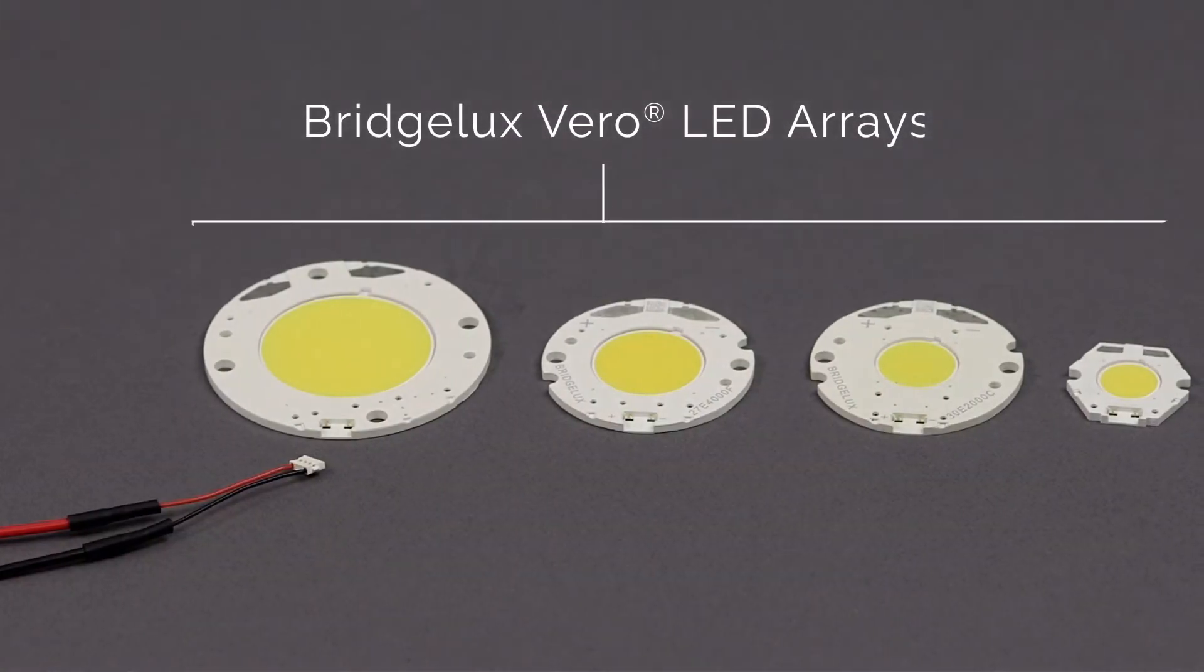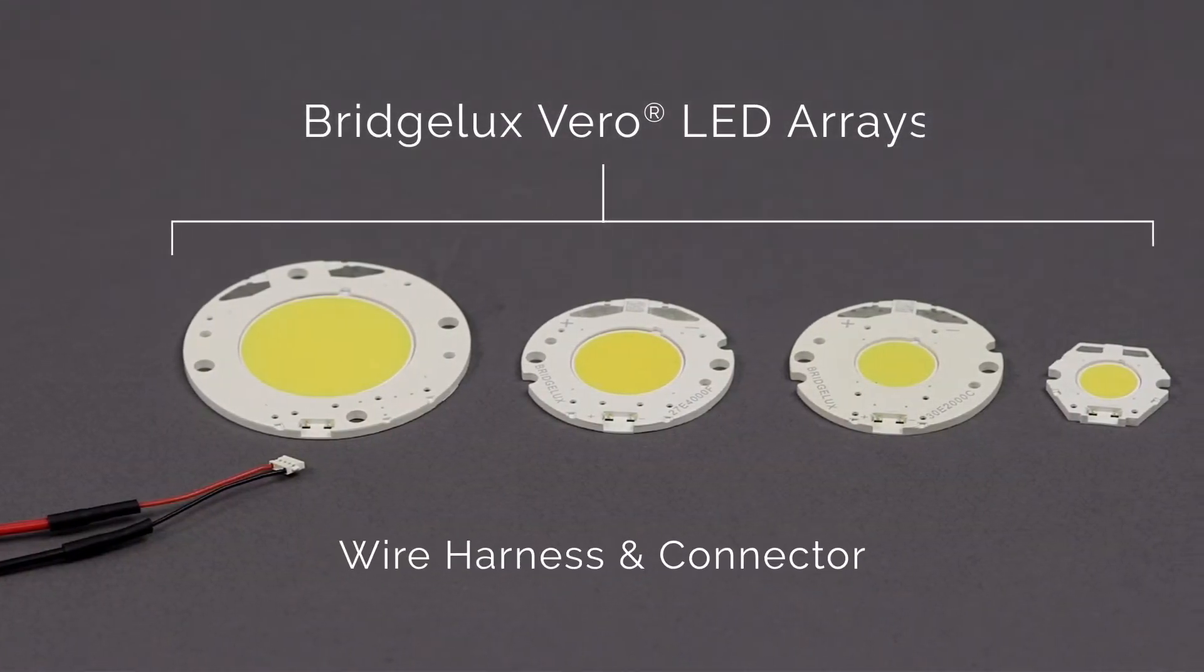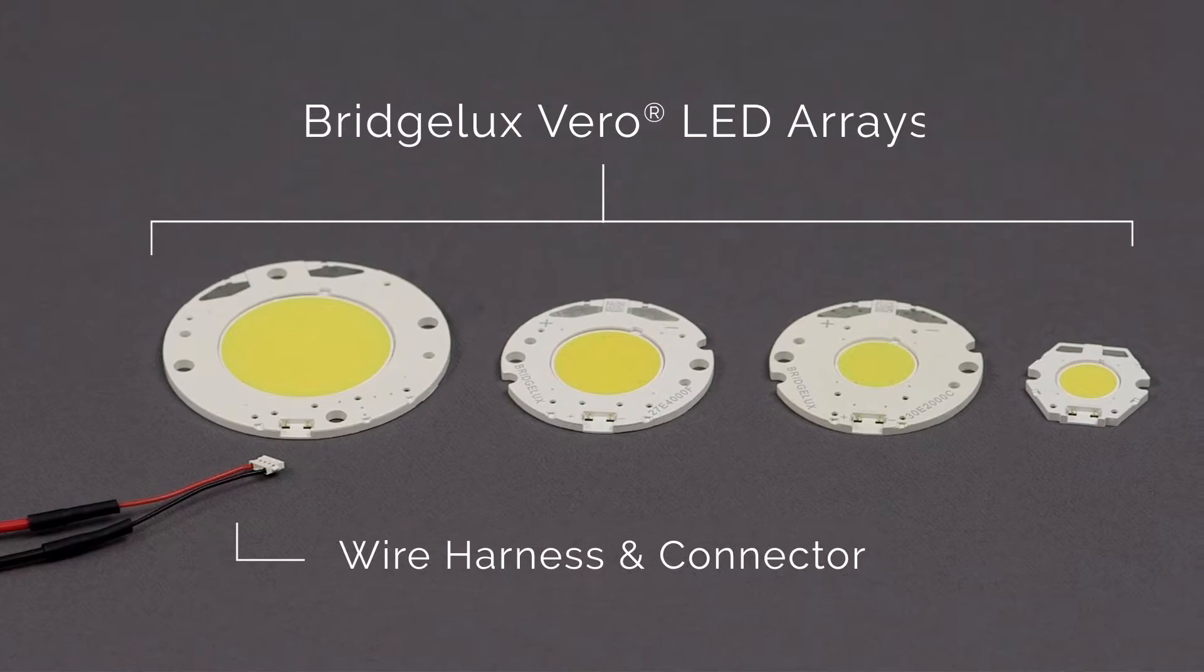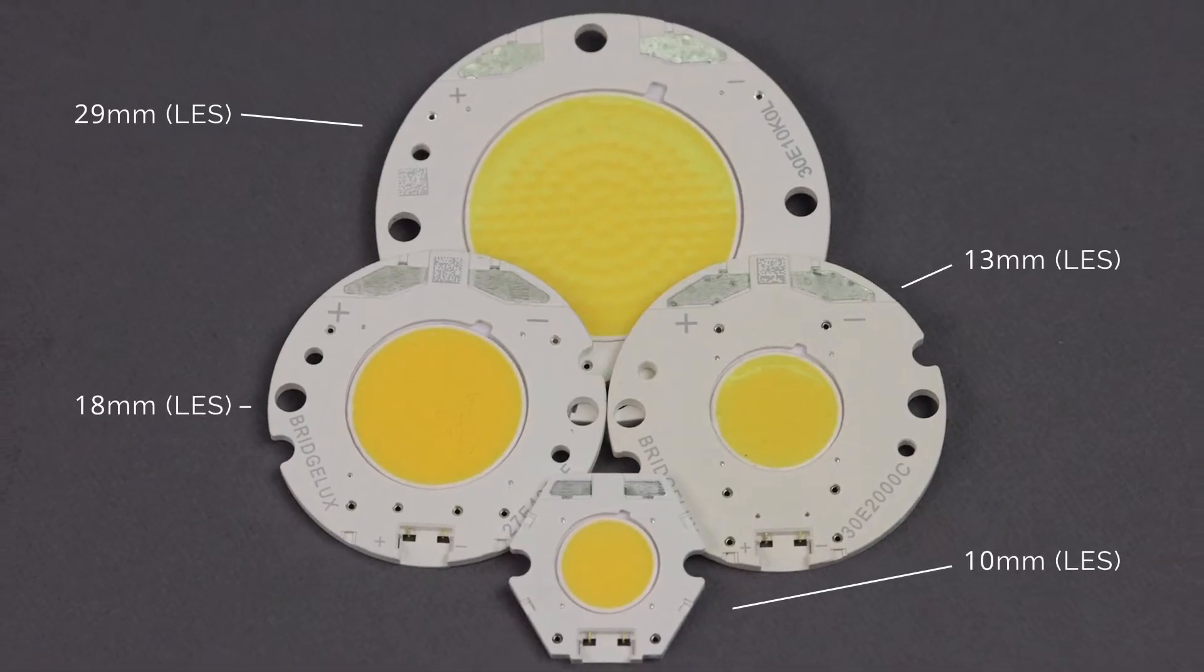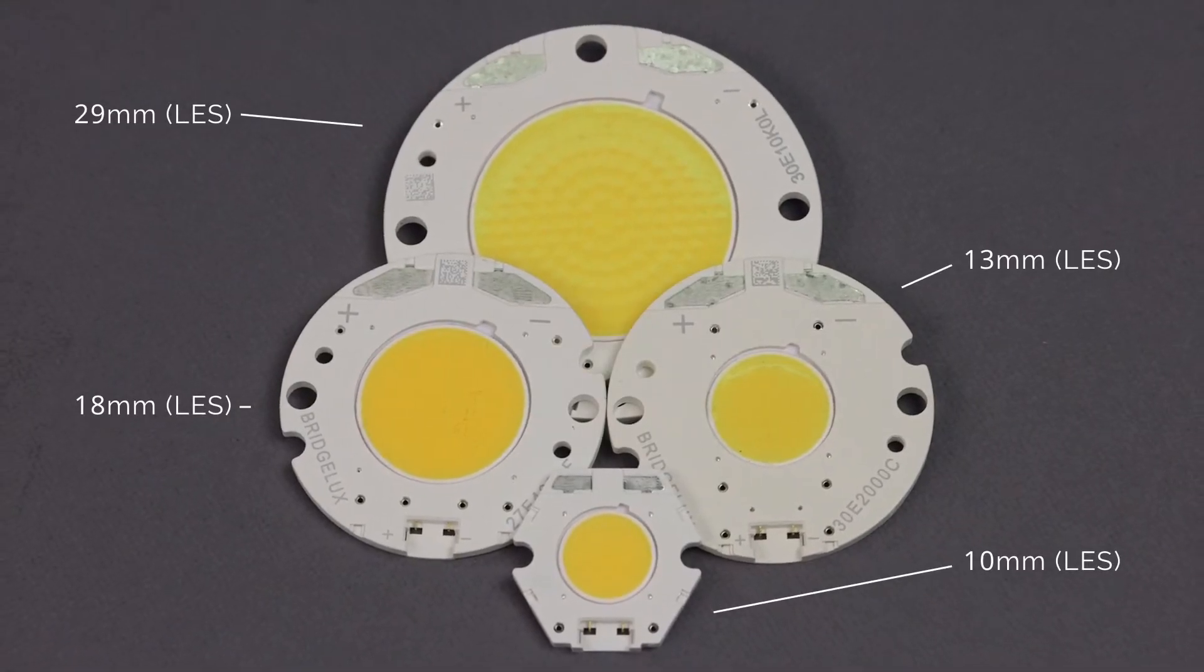The Bridgelux Vero series of LED arrays allow the use of a wire harness and a connector. Regardless of the size of the array, the connector and mating process remain the same.